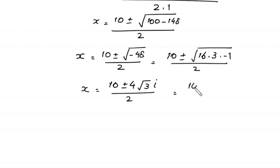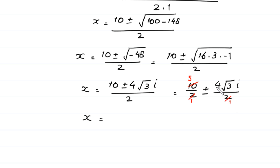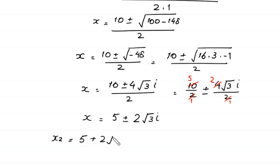This simplifies to 10/2 ± (4√3 · i)/2, giving x = 5 ± 2√3·i. So we get two more values: x₂ = 5 plus 2√3·i, and x₃ = 5 minus 2√3·i. So far we have found three values of x.